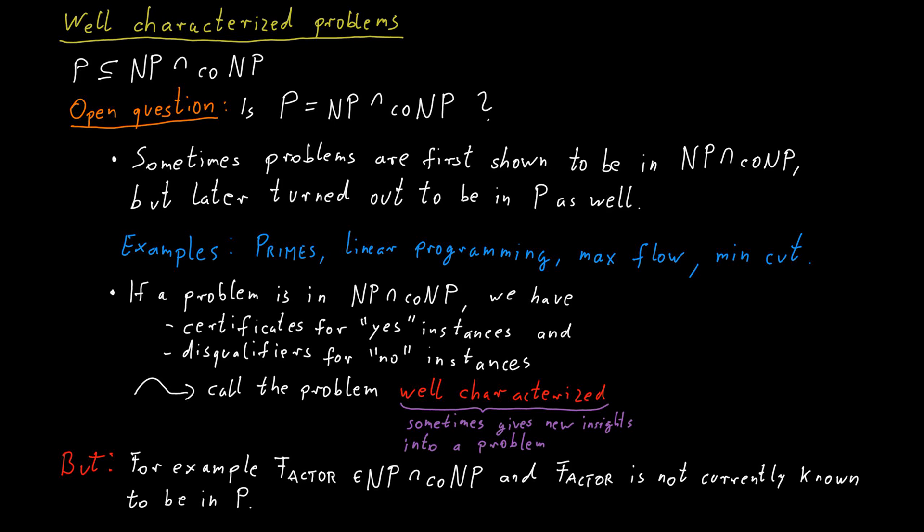In any case, since P is contained in NP intersect co-NP, to have a polynomial time algorithm for a problem, it is certainly necessary for a problem to be well-characterized. The only question is whether it's sufficient for a problem to be well-characterized in order for us to have a polynomial time algorithm for that problem. And this is the main open question.